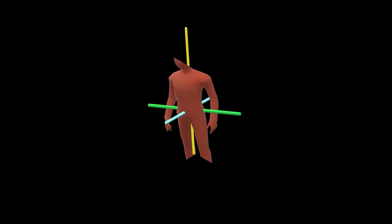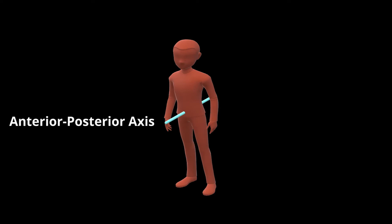We also use a set of axes to help us describe motion. These axes are oriented at 90 degrees to each other. The axes orient the body in a very specific way to help us describe motion. Our anterior-posterior axis is shown here. Motion that occurs around this axis would include abduction and adduction.